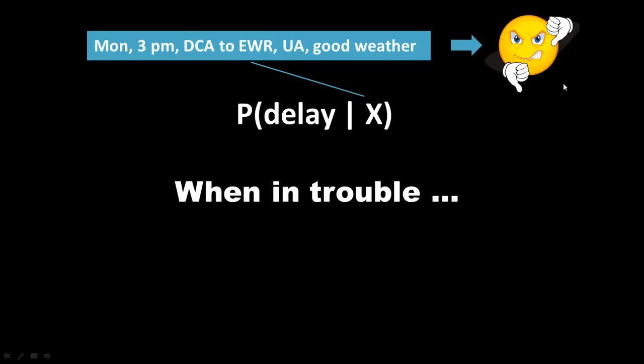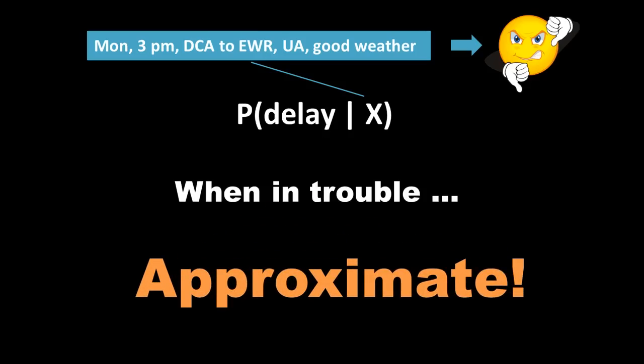So what do you do? In mathematics and in data mining and in practice in general, when in trouble you say, well, I can't find the exact solution. Do I give up? No. I approximate. That's what naive Bayes is all about.